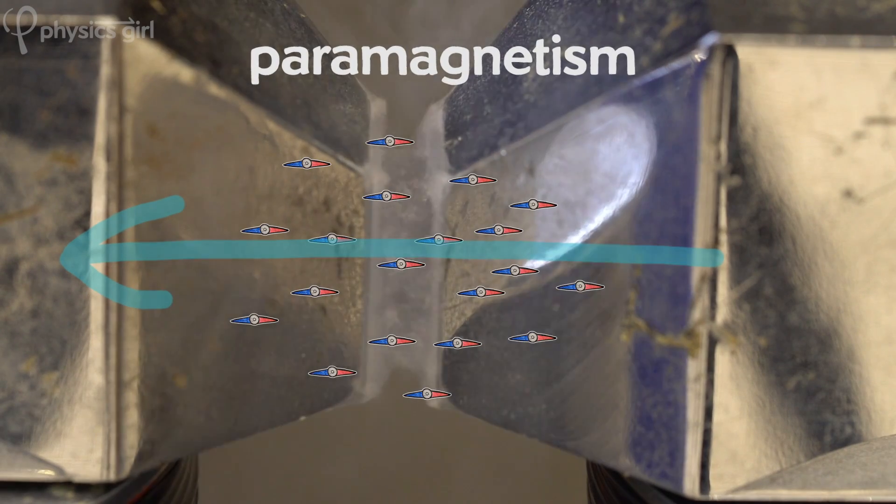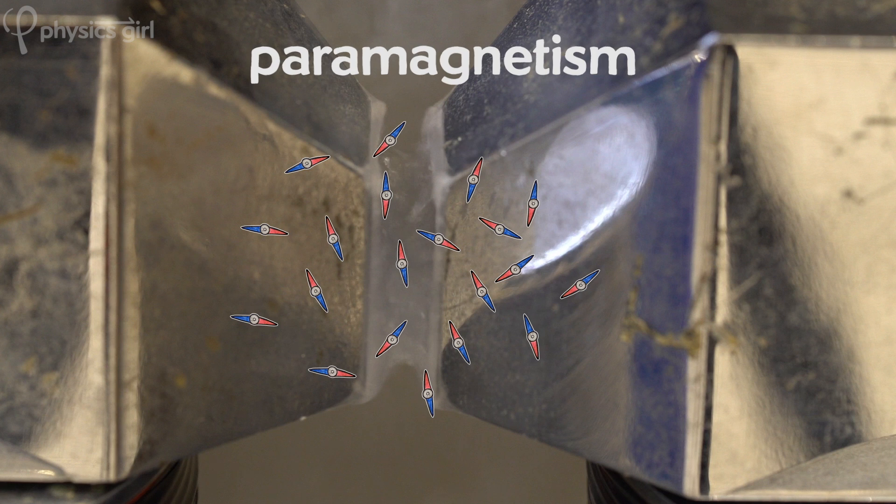But in a paramagnetic material, as soon as you turn off the external magnetic field, all those little mini magnets go back to pointing in random directions.